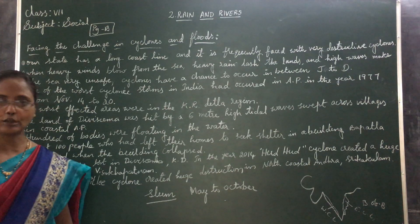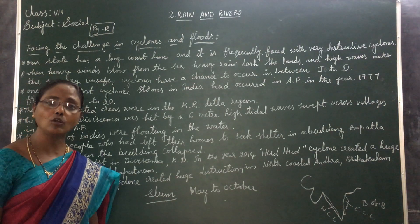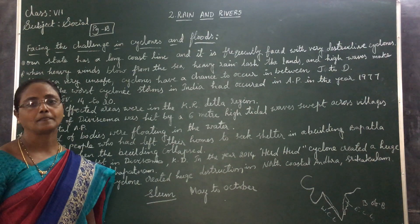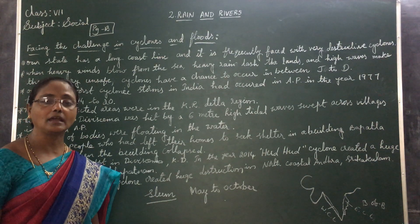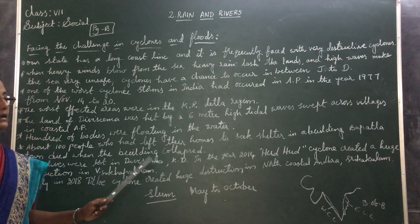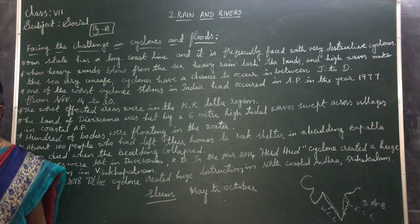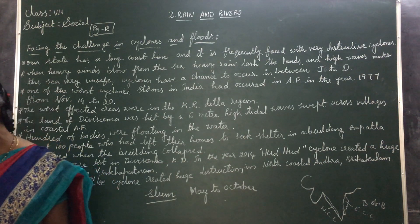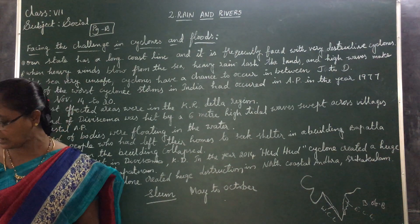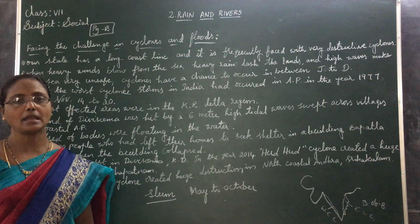What is cyclonic rain? A rain caused by a whirling storm is called cyclonic rain. Why are cyclones formed? The cyclones are formed in the sea due to the intense heating up in the summer.